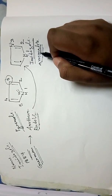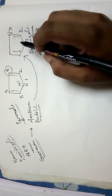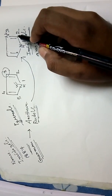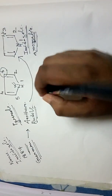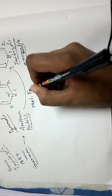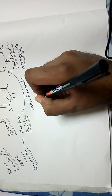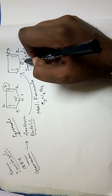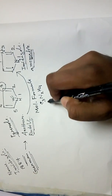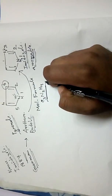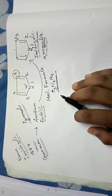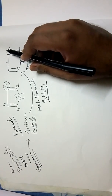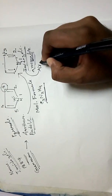Imidazole is one derivative of pyrrole. From the structure, we can see two nitrogen atoms and three carbon atoms, giving it the molecular formula C₃N₂H₄. It is classified as a diazole because two nitrogens are present — one at position one and one at position two. That is why all imidazoles are diazoles.